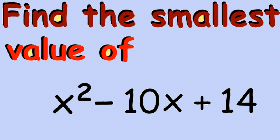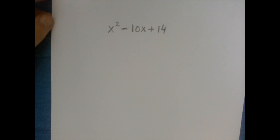We have a quadratic expression, x squared minus 10x plus 14, and we are asked to find the smallest possible value of this expression. The first thing we're going to do is complete the square — not factor by completing the square, just completing the square. We will stop a little earlier than we usually do.